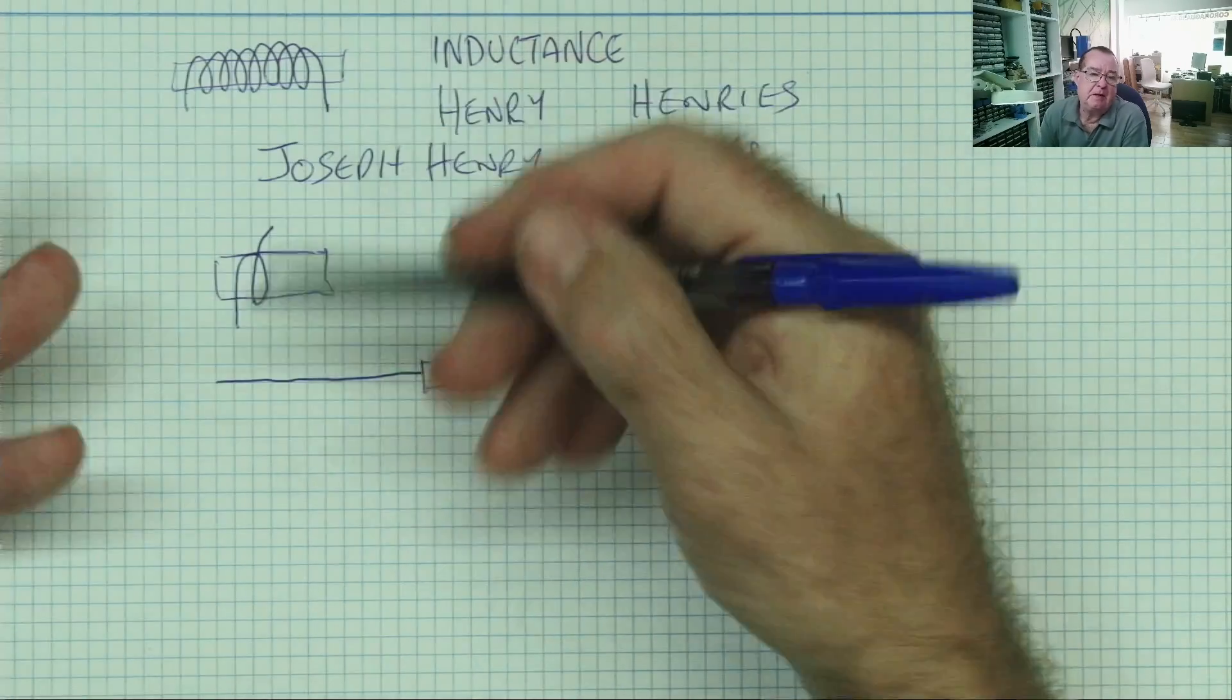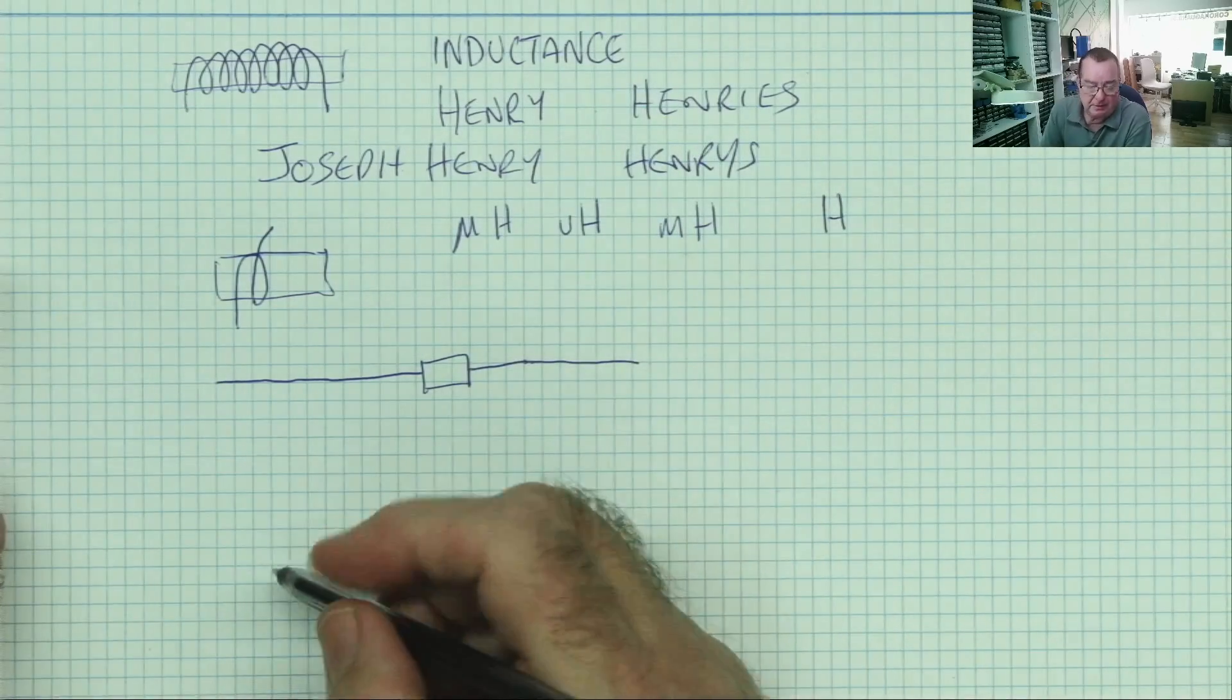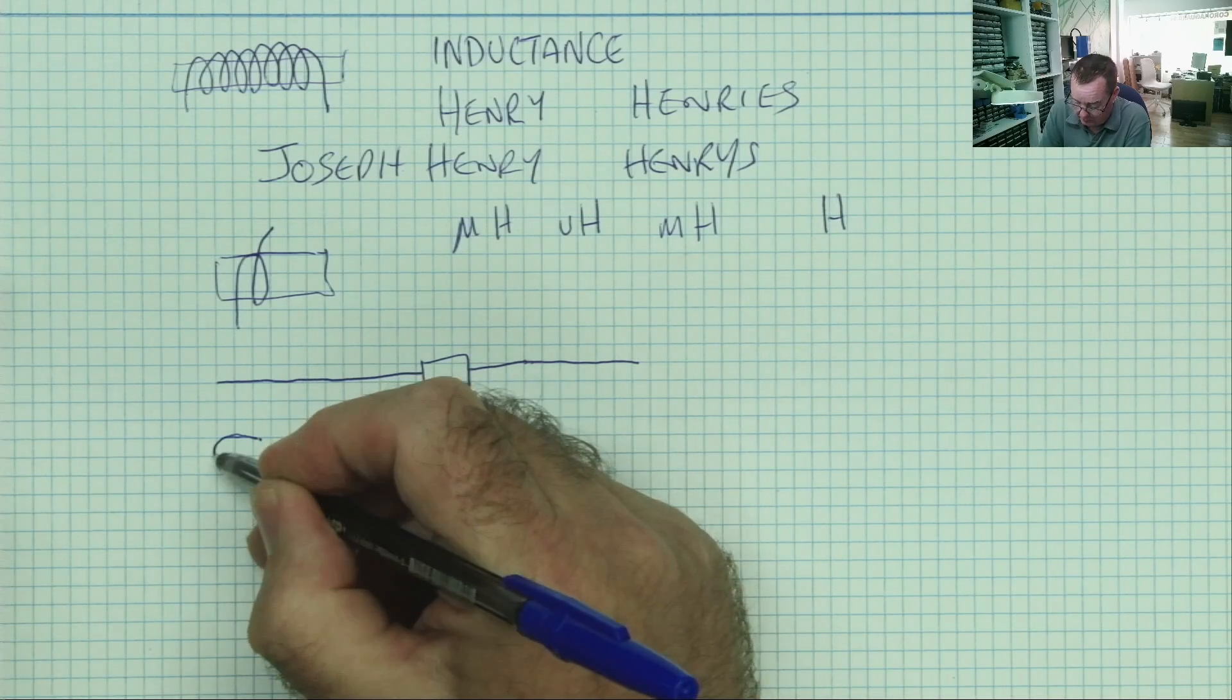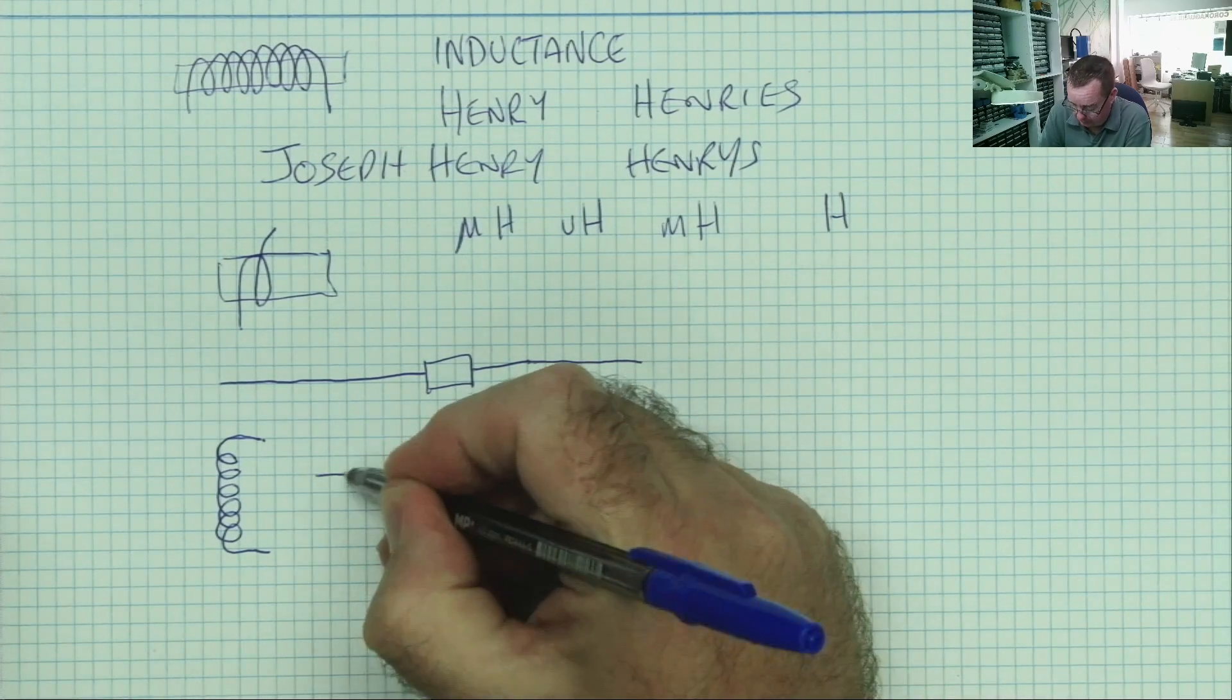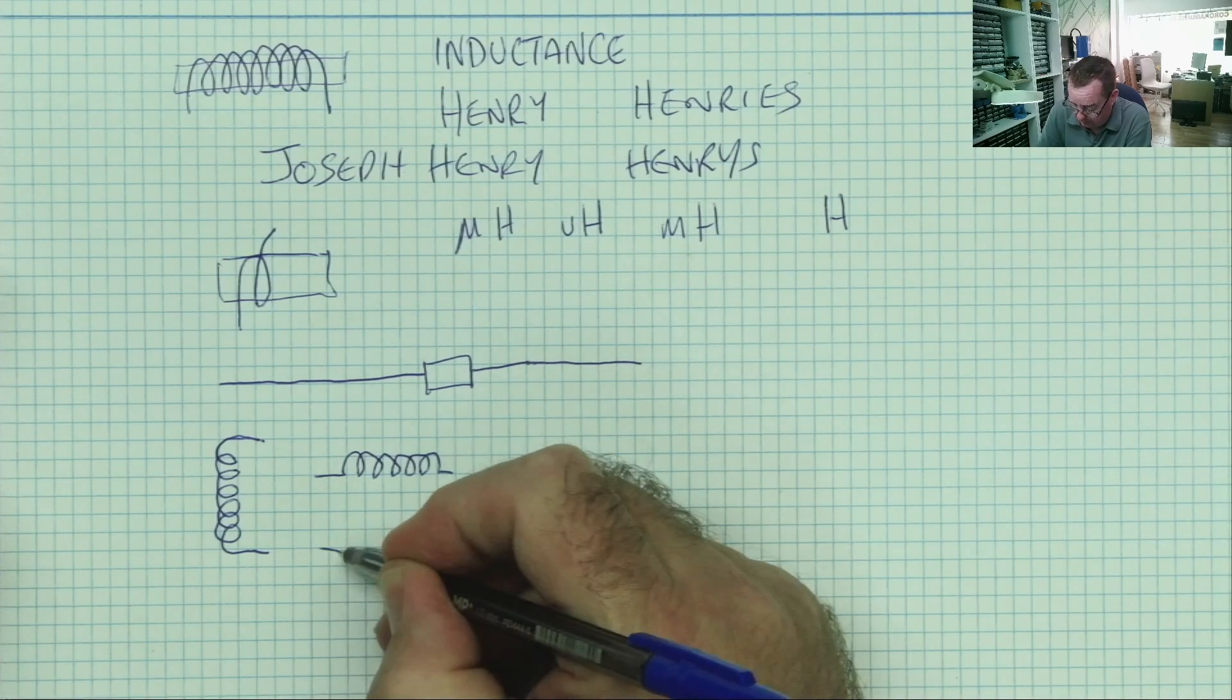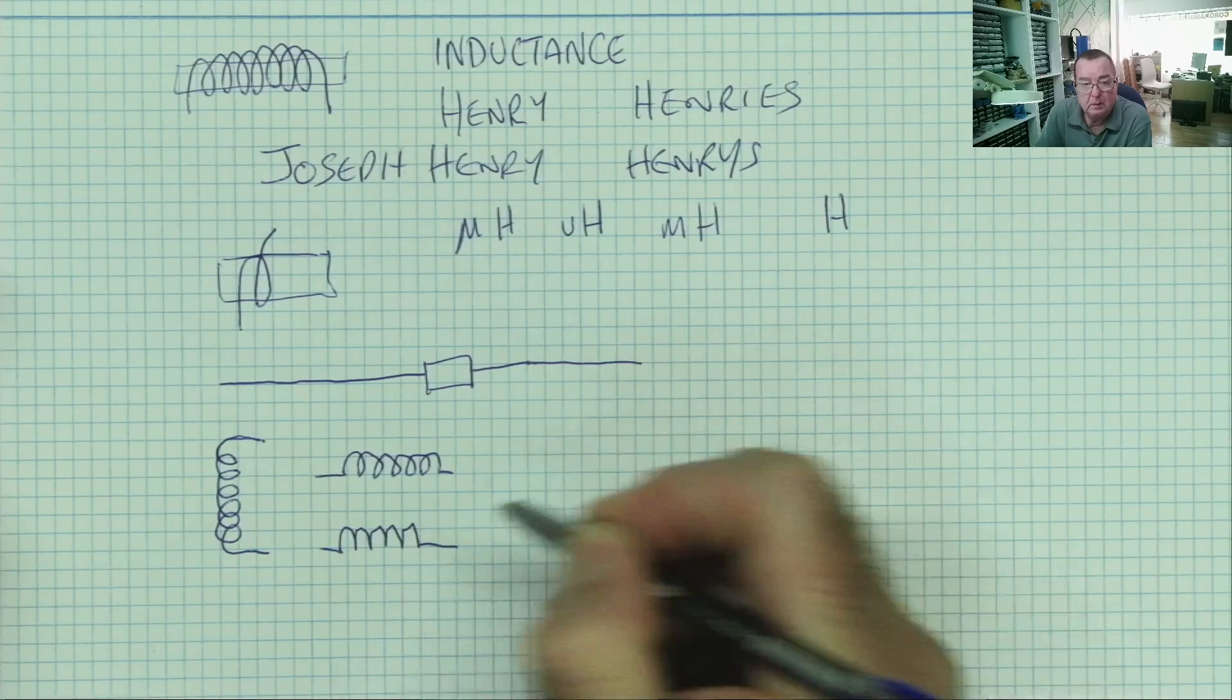Because an inductor is made of a piece of wire, normally wrapped around the former, the symbol you will find on circuit diagrams for an inductor is this, sometimes like this, can also be like this.